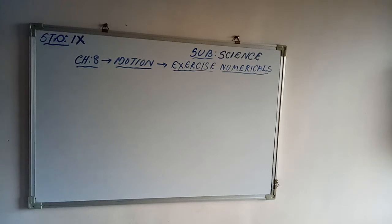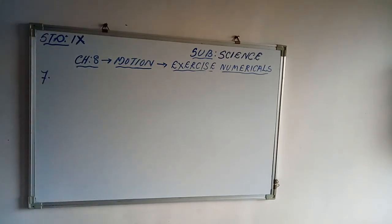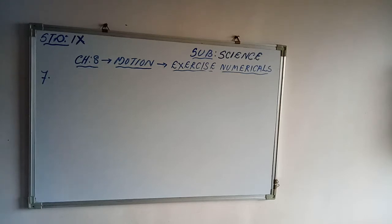Now I am going to solve question 7. A ball is gently dropped from a height of 20 meters. If its velocity increases uniformly at the rate of 10 m/s², with what velocity will it strike the ground? After what time will it strike the ground?